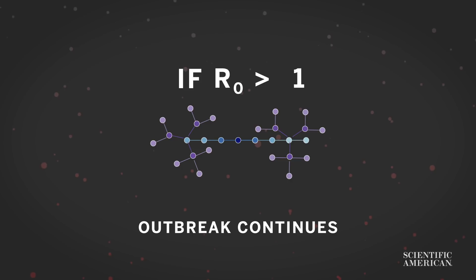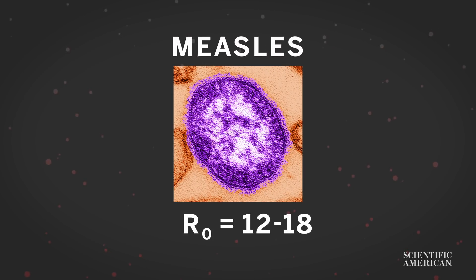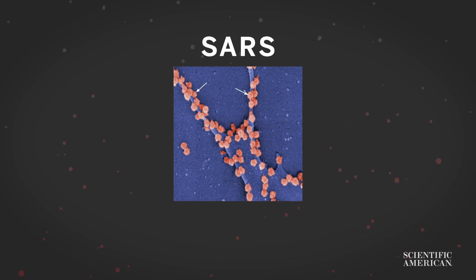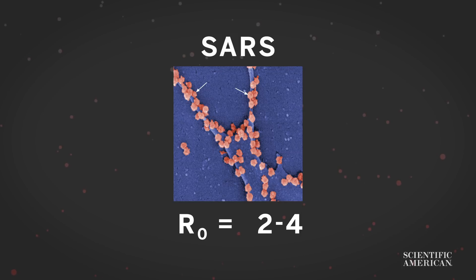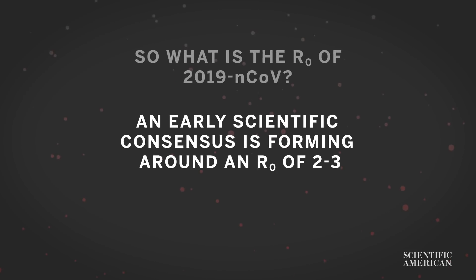Here are some R-naughts from past outbreaks. Measles' R-naught is an estimated 12 to 18. SARS, or Sudden Acute Respiratory Syndrome, has an R-naught of 2 to 4 — it is also a coronavirus. Early genetic analysis suggests that the new coronavirus emerged from a virus related to SARS. So what is the R-naught of 2019-nCoV? An early scientific consensus is forming around an R-naught of 2 to 3.